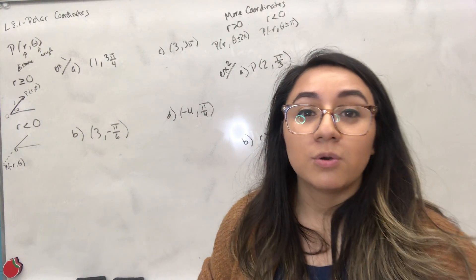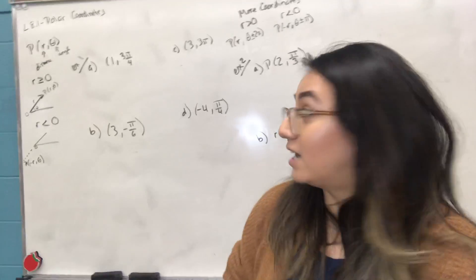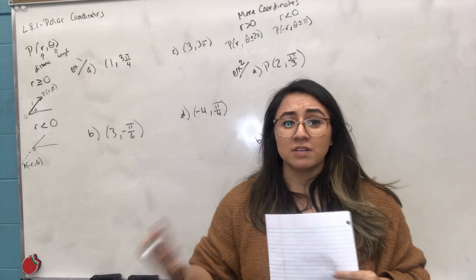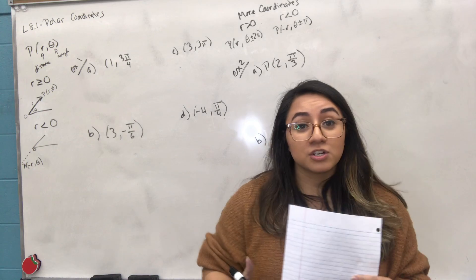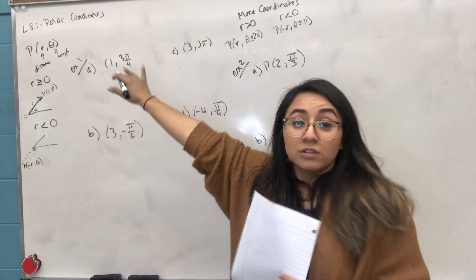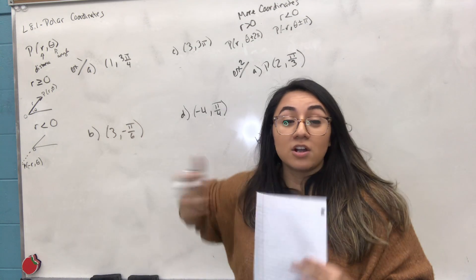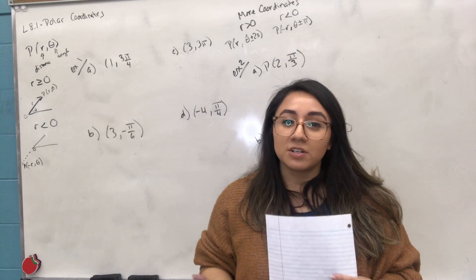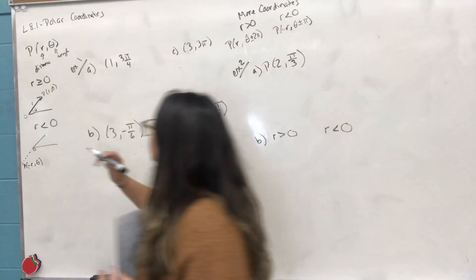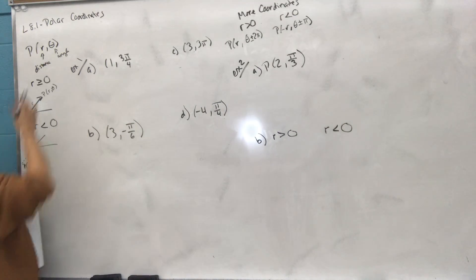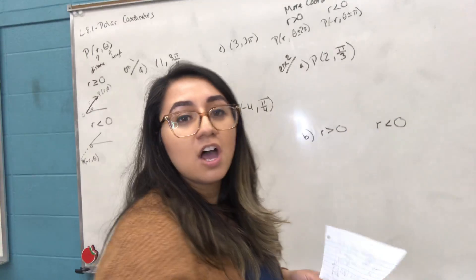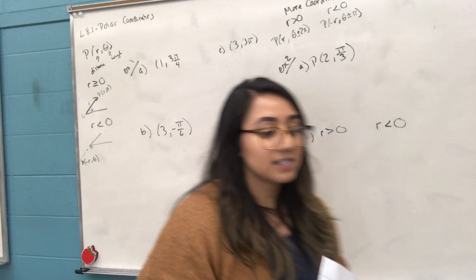We're going to go ahead and deal with polar coordinates. This lesson deals typically with a combination of trigonometry and the unit circle and radius in general. Polar coordinates are coordinates but they're a different type — they're not x and y anymore. The polar coordinates are now r and theta. Theta is just the angle, given to you in radians. r is like the radius.